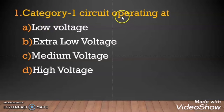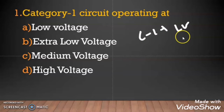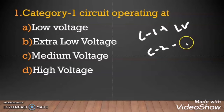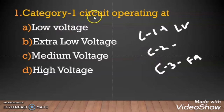Question 1: Category 1 circuit operates at which voltage? Options are low voltage, extra low voltage, medium voltage, or high voltage. As per ADDC regulation, there are three types of circuits. Category 1 is for low voltage system. Category 2 is for communications like telephone system wires and CCTV system wires. Category 3 circuits include fire alarm wire and central battery system wire. So as per the question, category 1 circuit operating at low voltage is the right answer.